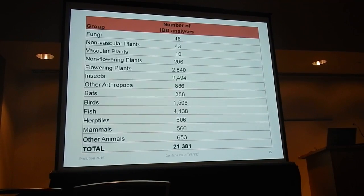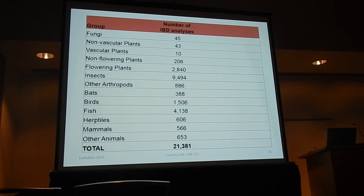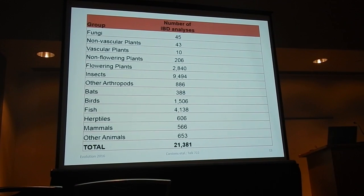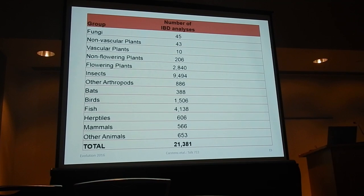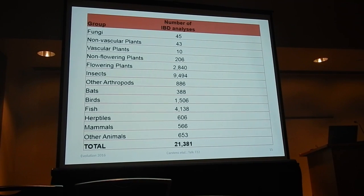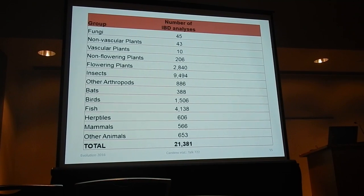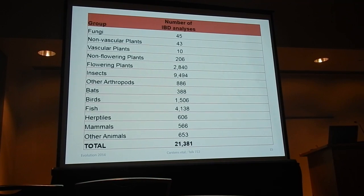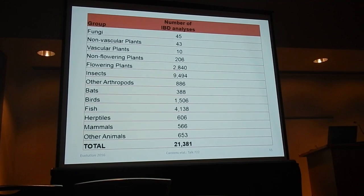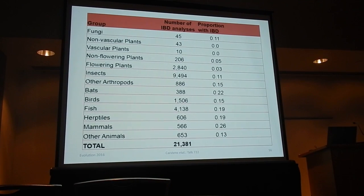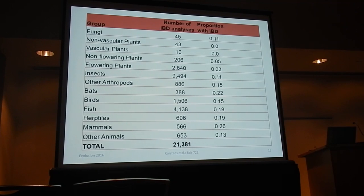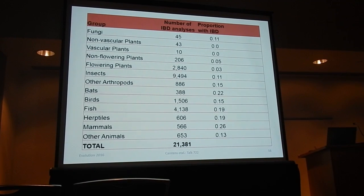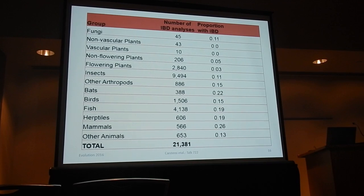We ended up doing something like 21,000 analyses because for some species there was more than one locus available, and we went ahead and did an IBD analysis on each locus independently. What we find is that the proportion of species that exhibit isolation by distance is not really consistent across different taxonomic groups.